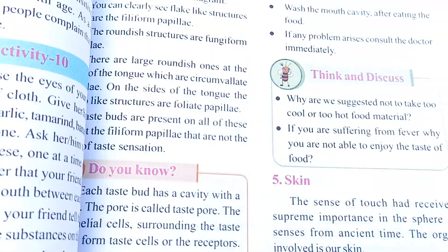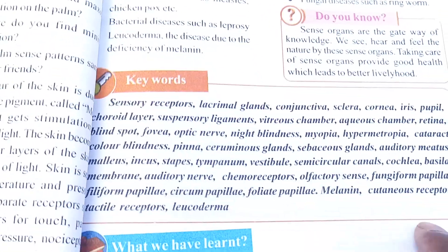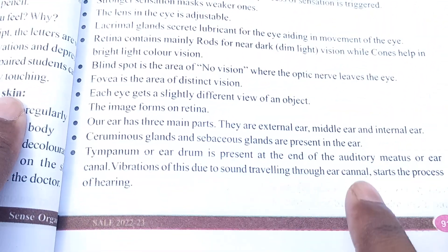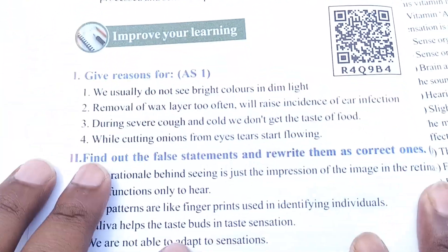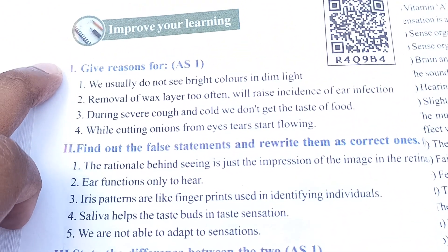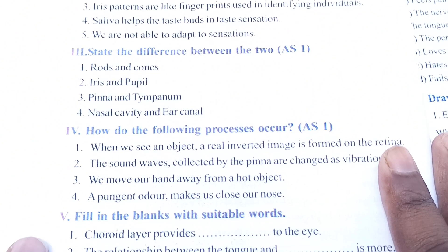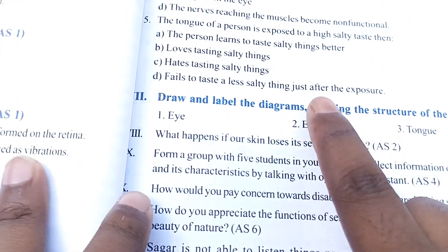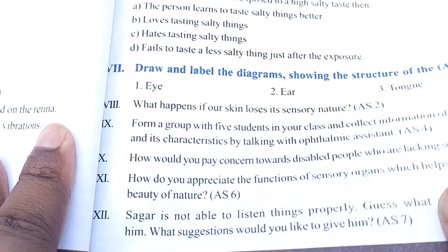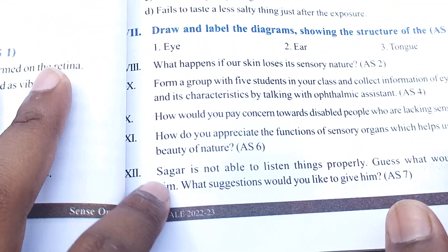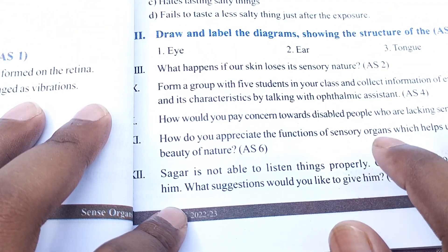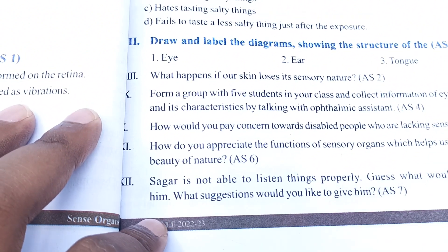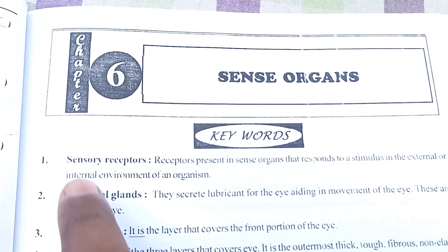So if you come here, this is our chapter, and after that you can see the keywords. We will see the keywords, and after that, 'What We Have Learned' is already given in detail so we will not cover that one. After that, 'Improve Your Learning' — there are five questions there. Then we have 'Choose the Correct Answer', and we will see that section too. We will also see the activities.